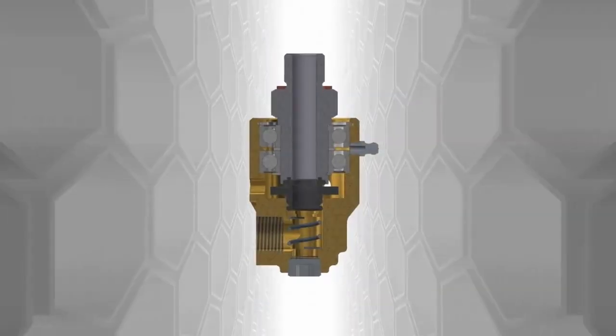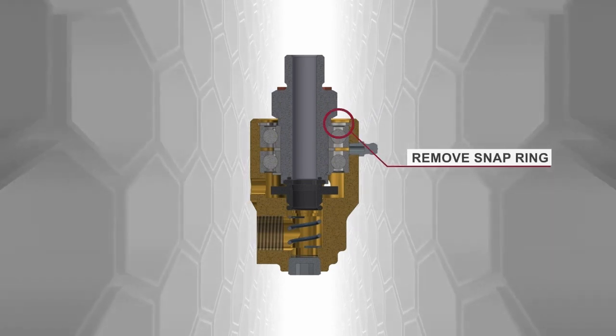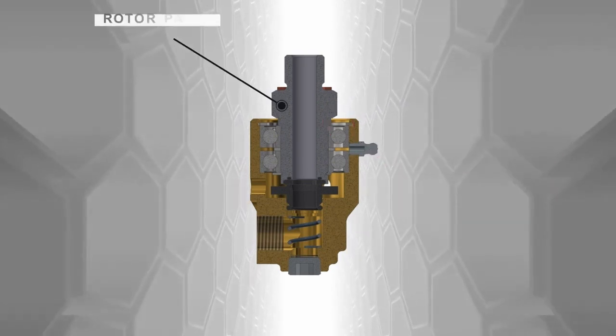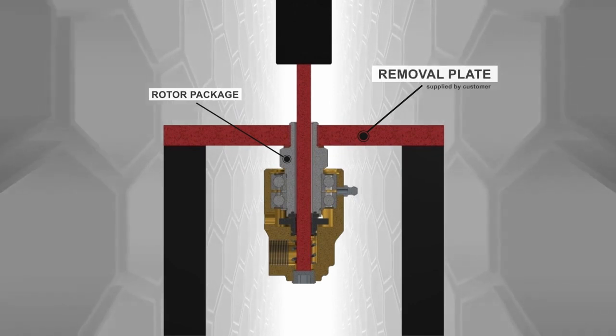The first step is to remove the union snap ring. The rotor package is then threaded into a removal plate that is supplied by the customer.